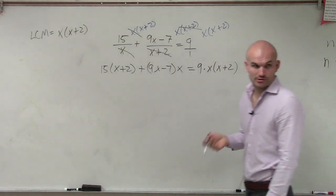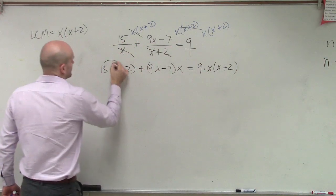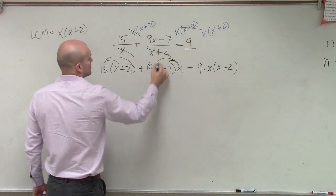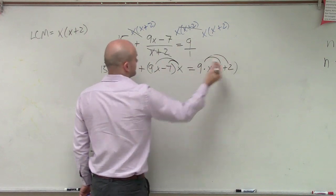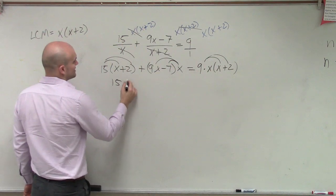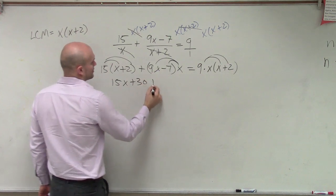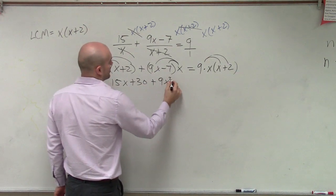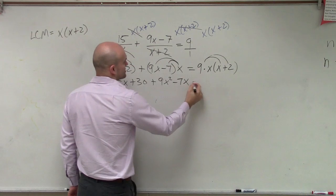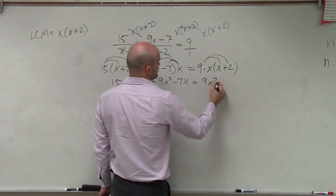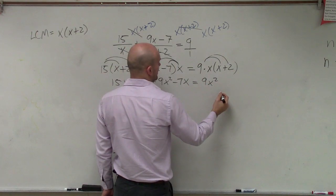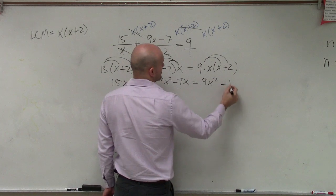So now I need to apply the distributive property. So here I get 15x plus 30 plus 9x squared minus 7x equals 9x squared plus 18x.